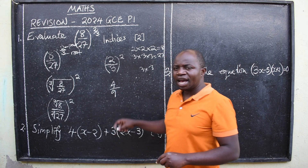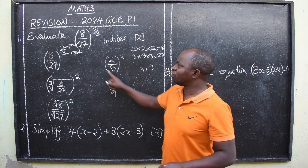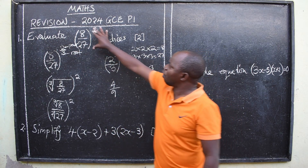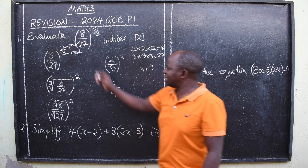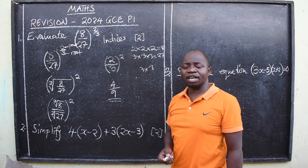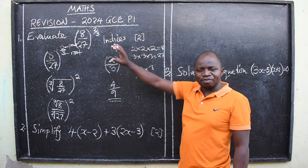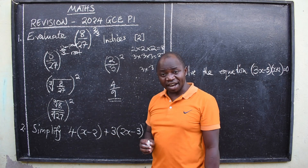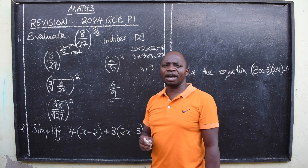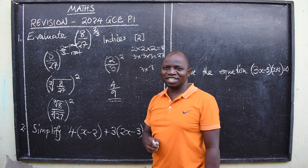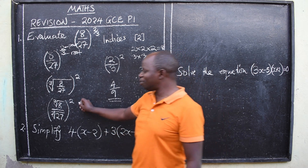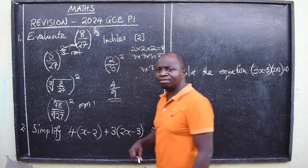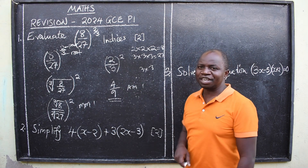Remember there is a power of 2 outside, so this power affects both numbers. It will be 2 squared over 3 squared: 2 times 2 gives 4, and 3 times 3 gives 9 — not 3 times 2. So the answer is 4 over 9. At this point you have answered this — you've given the exact value. If you used a calculator, this is the answer it would display. In the allocation of marks, there is a method mark of 1 and an answer mark of 1.